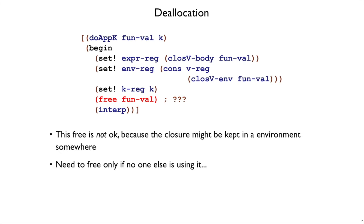Because in curly, there can be multiple references to a single closure. You can assign a closure to a variable and then refer to that variable multiple times. So just because you're calling a closure doesn't mean you're done with it for good. We need a way of freeing things like closures or even continuation records only if no one else is using it.